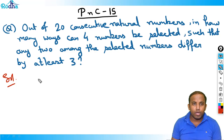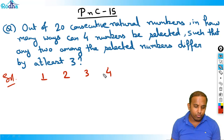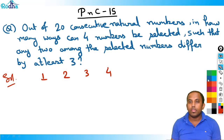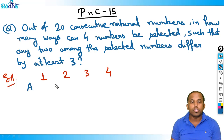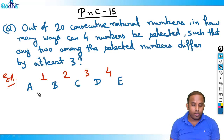So let my four numbers be 1, 2, 3, and 4 — these are my four numbers out of 20. So I'll take the gap: let's say there are 'a' numbers before the first number, 'b' numbers in between first and second, 'c' numbers in between second and third, 'd' numbers in between third and fourth, and 'e' numbers after the four numbers.